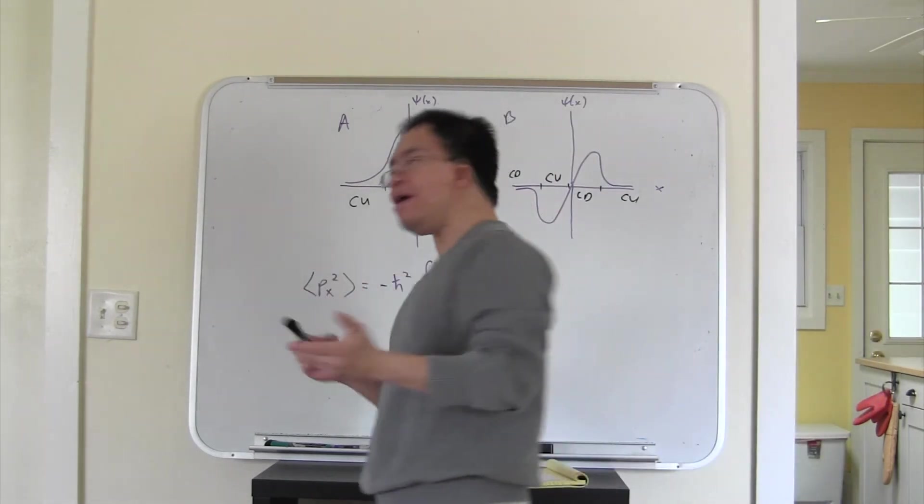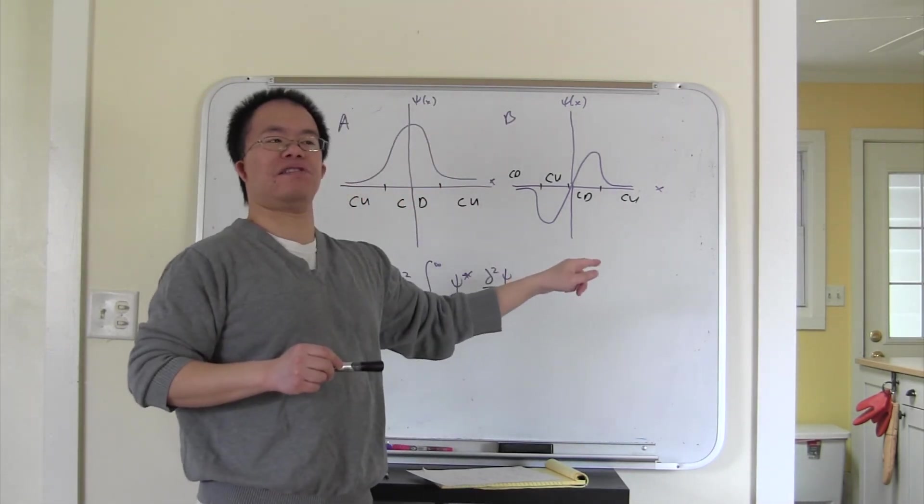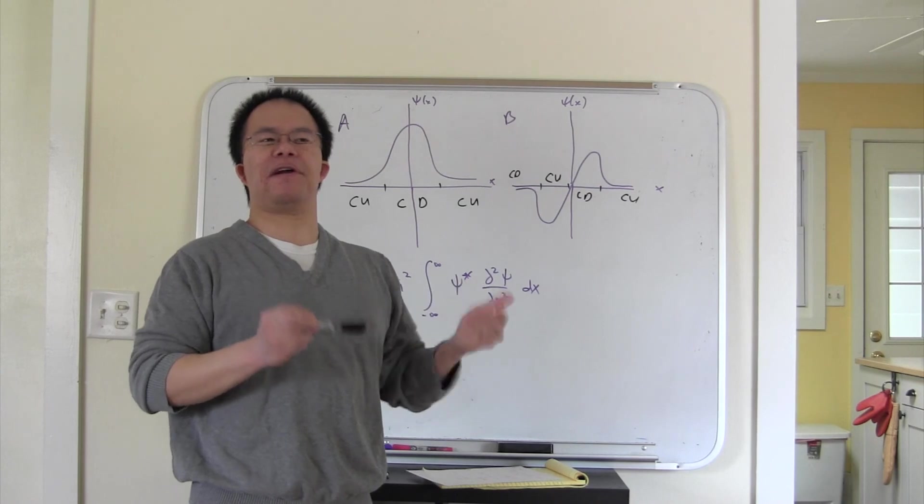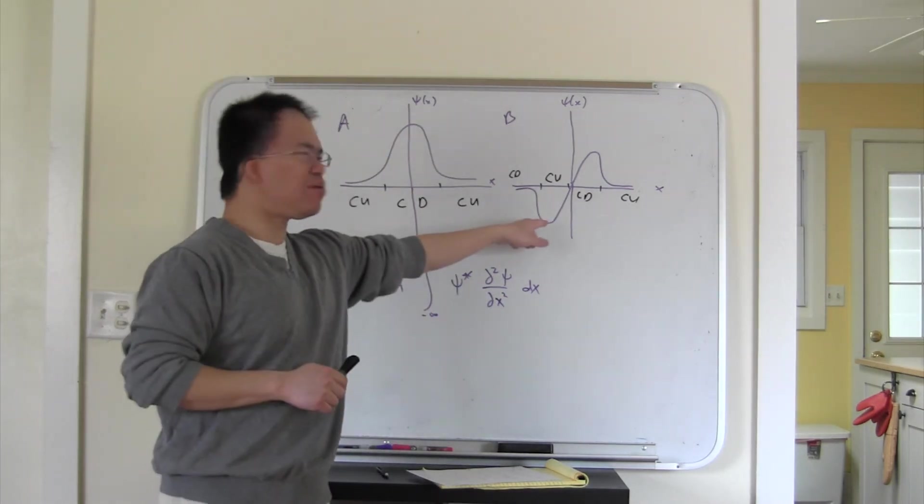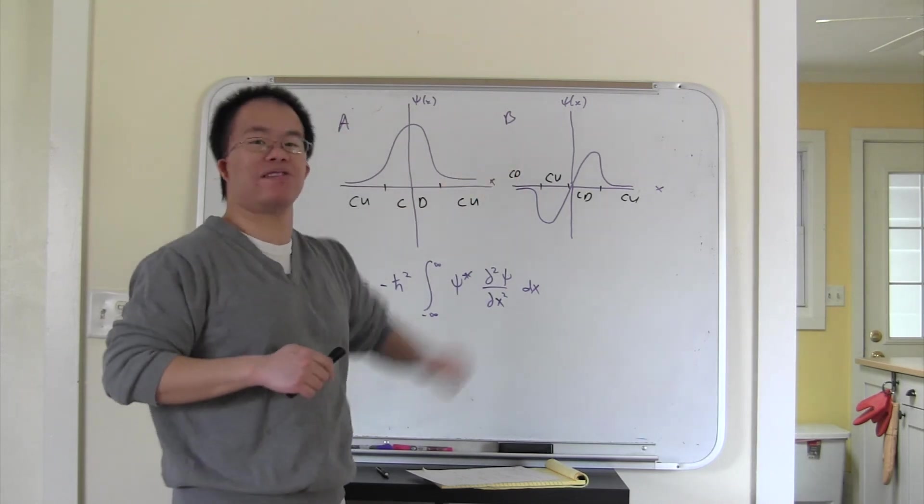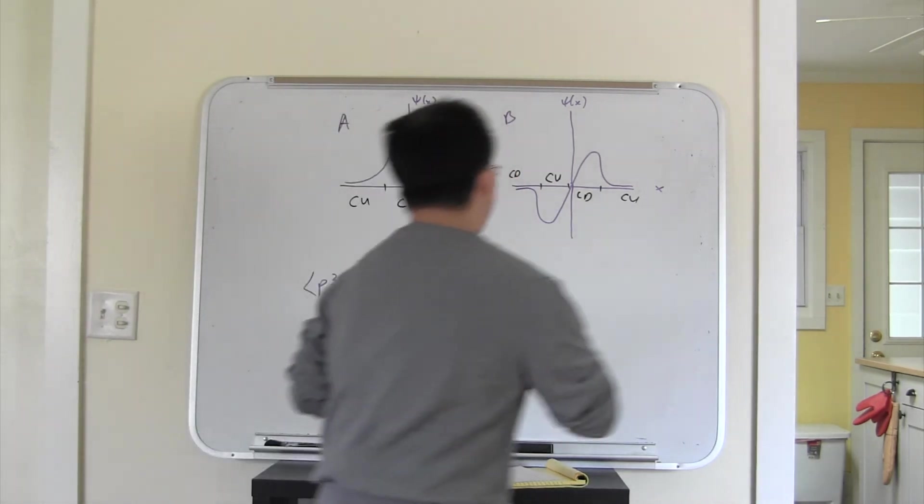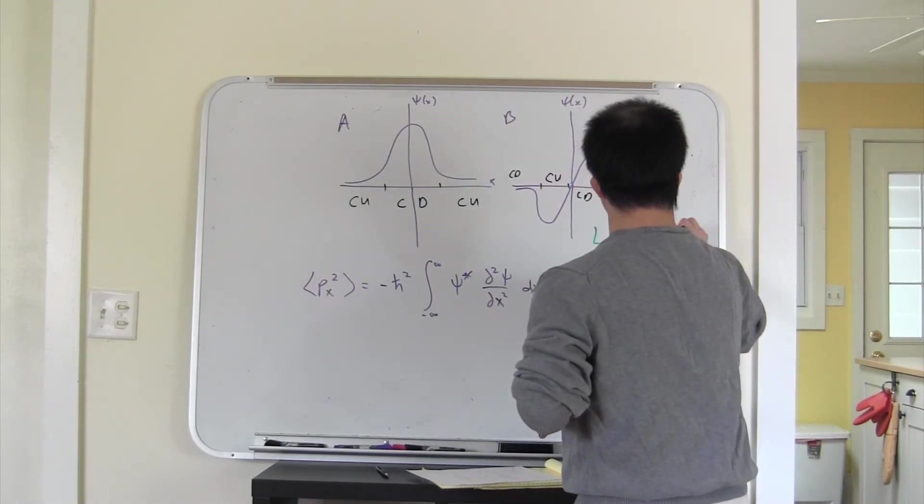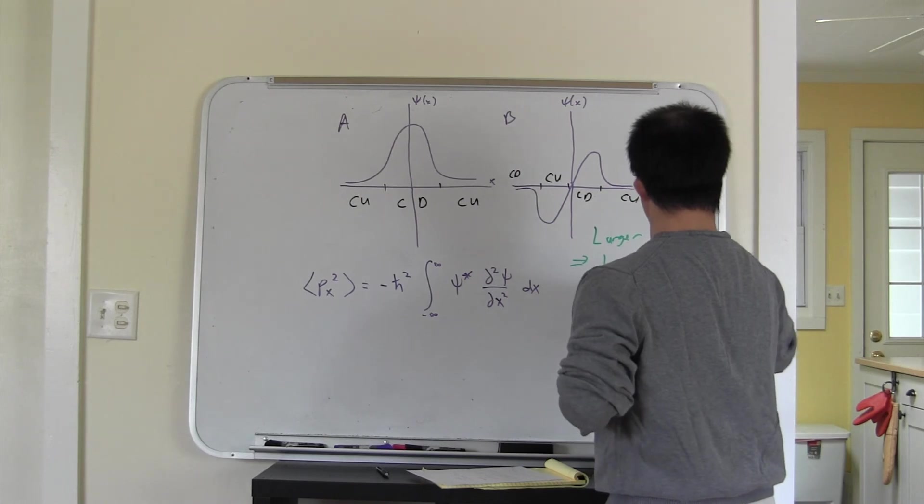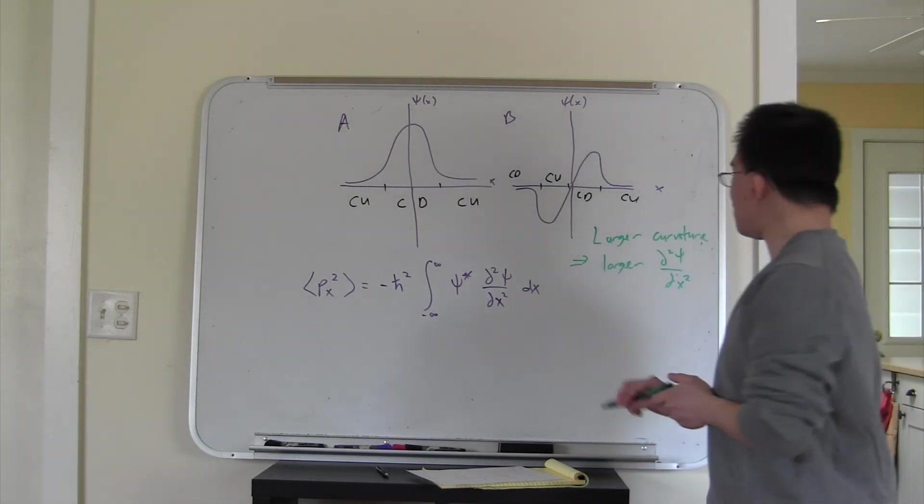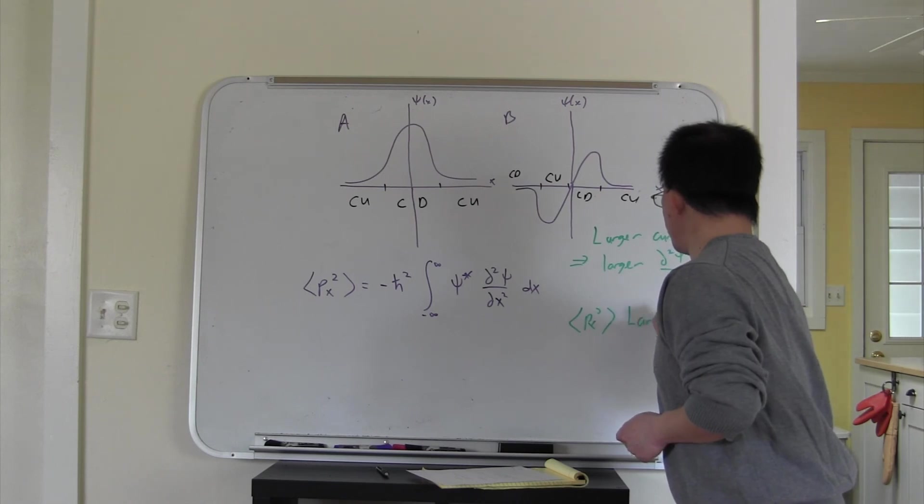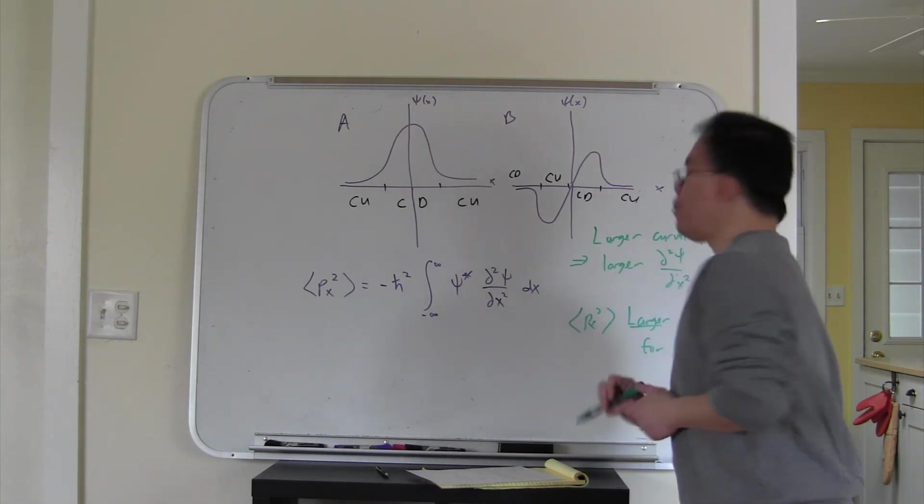Now, how can we compare px squared for these two wave functions? Well, the key turns out to be thinking about this, because we want to compare the curvature of these two wave functions. This wave function does more wiggling. It's going to have a larger curvature than this wave function, which sort of just meanders once like that. This has got a larger curvature, larger value d squared psi dx squared, and so it in fact turns out to be the case that px squared expectation value is larger for wave function B.